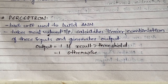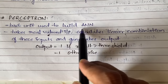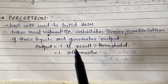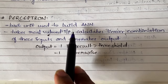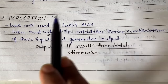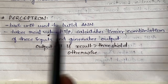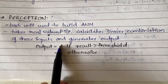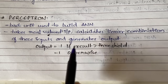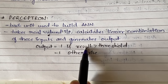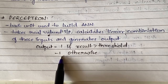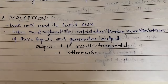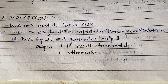The perceptron is a basic unit used to build artificial neural networks. It takes real-valued inputs — also called continuous inputs — calculates the linear combination of these inputs, and then generates an output. The output will be one if the obtained result is greater than the threshold value, or negative one if it is not greater than the threshold value.